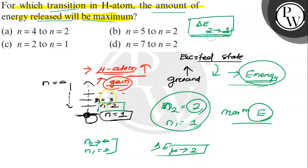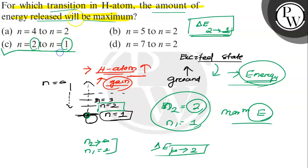This is the correct answer because it is the nearest path and releases a very large amount of energy, as it stored a very high amount of energy. So the correct answer for this question is option C: n2=2 to n1=1, jumping from the second energy level to the ground state of the hydrogen atom. I hope you understood it well. Best of luck.